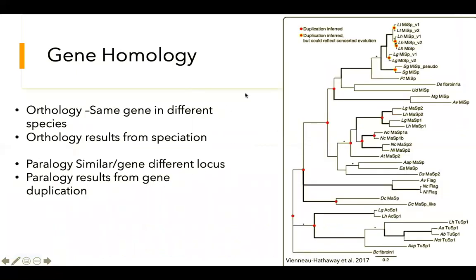Additionally, you can have homologous genes — genes that are shared across different species. Spider silk genes are all related to one another. Here you have Major Ampullate and Minor Ampullate Spidroin from a variety of species, such as Latrodectus hesperus (the Western Black Widow) and Latrodectus geometricus. These Minor Ampullate Spidroins are homologous. When homologous genes arise due to speciation events — the same gene but in different species — they are called orthologs, and they result from speciation.